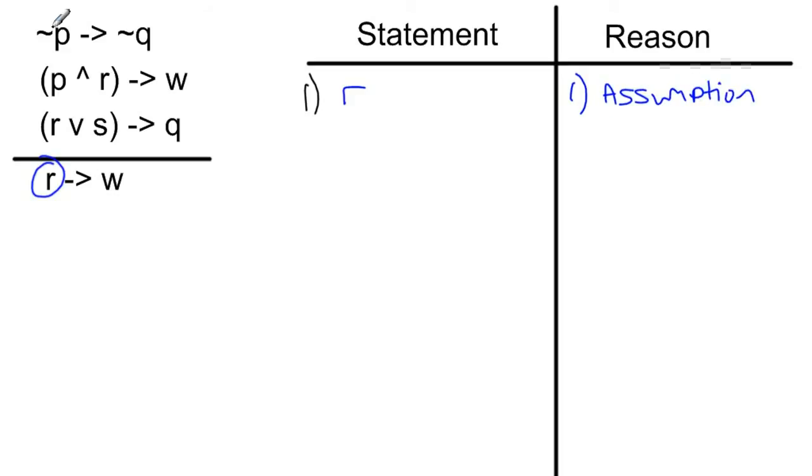Now I'm going to look to see which one of my premises has R in it. Well, I have this one, and I have this one. In order to be able to do this one, I have to know something about P. But I can do something with this statement, because here I could say that R or S is true. Because surely if R is true, then R or S is true, because this is just a disjunctive statement. Just one of them has to be true. So this is actually called disjunctive addition, and we're going to say to line 1.